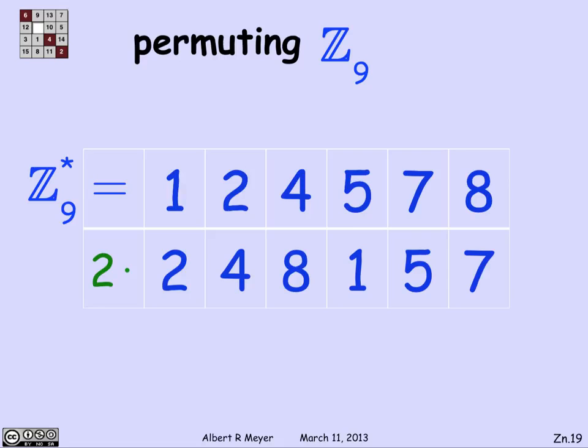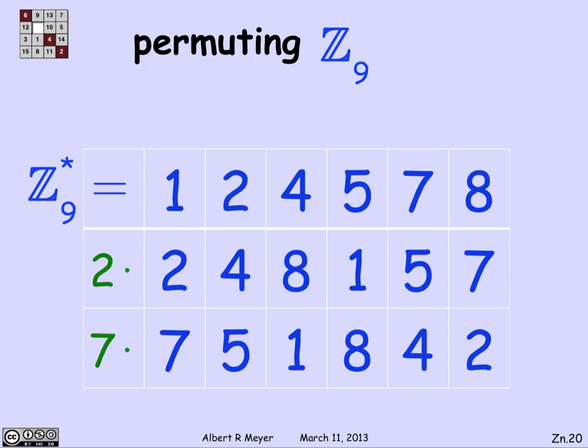Let's do one more example. Let's try multiplying by 7. It's another respectable element over here. 7 times 1 is 7. 7 times 2 is 14, which means it's 5 in Z_9. 4 times 7 is 28. Well, 3 times 7 is 27. So that leaves a remainder of 1. And 4 times 7 is 1 in Z_9. Likewise, 5 times 7 is 8. 7 times 7 is 4. And 7 times 8 is 56, which translates to 2. And sure enough, as claimed, I see the same numbers, 7, 5, 1, 8, 4, 2, just these numbers scrambled in order. They're permuted, which is the outcome of multiplying by 7.